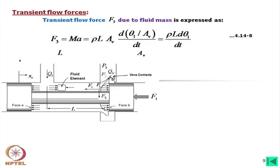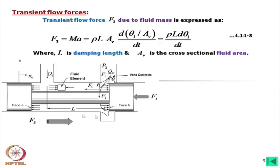Please note it is dq1/dt, not theta1. This transient force acts in the direction of flow. The length L here is called the damping length, which plays a major role in valve performance. A smaller damping length gives a smaller transient force; a larger damping length gives a larger transient force.